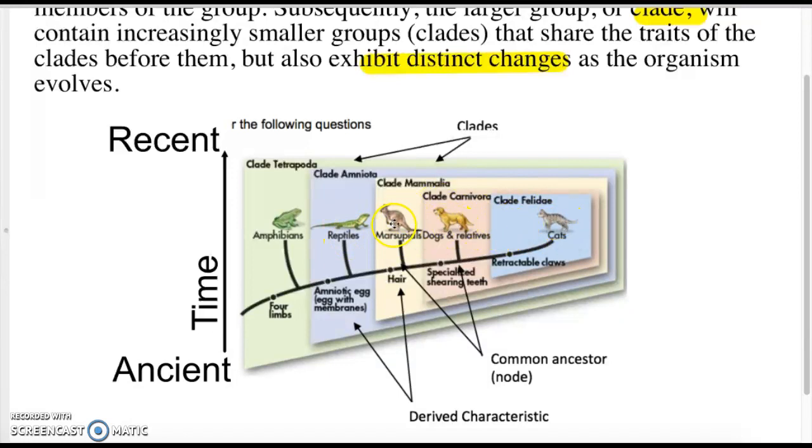Down here you see forelimbs, amniotic eggs which just means eggs with membranes, hair, specialized shearing teeth, retractable claws. Those are all what we call derived characteristics that define the difference between each clade.